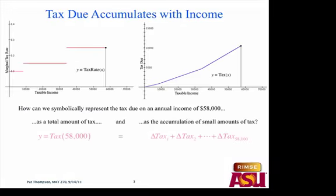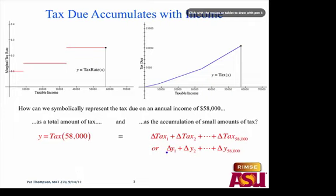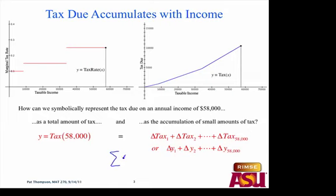We want a way of expressing this more nicely. We use this symbol — Greek sigma — and it stands for sum. Since all these pieces are pretty much exactly alike, we can write it just one time knowing it will repeat. We write one term, delta Y, but what is changing is which dollar of tax we're talking about. We'll call that index i. So i is which dollar of taxable income we're talking about, starting at 1 and going up to 50,000.